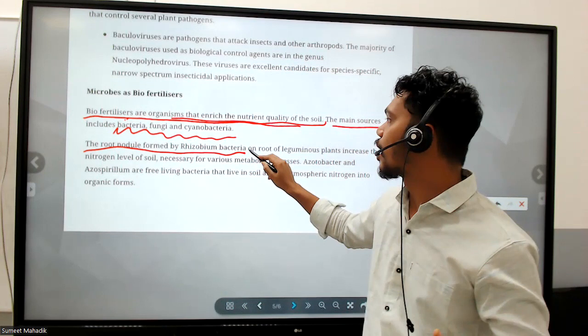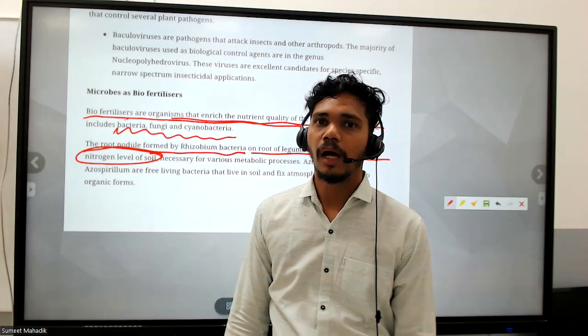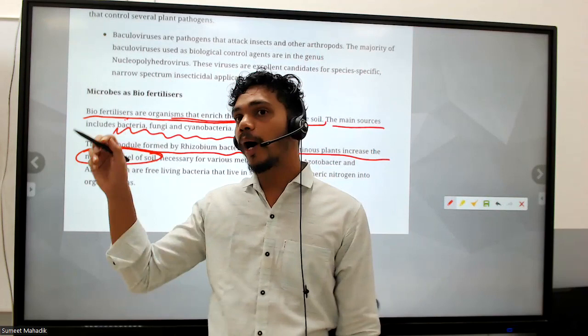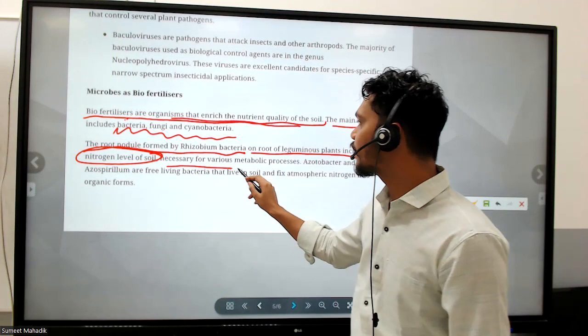Root nodules formed by Rhizobium bacteria on leguminous plant roots increase the nitrogen level. The atmosphere has about 78% nitrogen but plants are not able to take it up directly. So plants require Rhizobium bacteria to convert atmospheric nitrogen to nitrates and nitrites, which can then be absorbed through the roots - necessary for various metabolic processes.